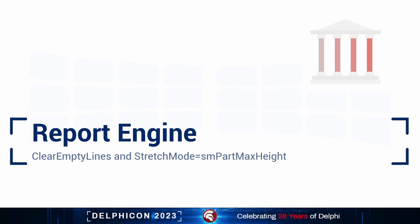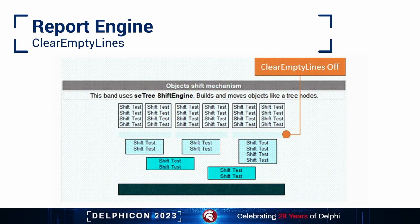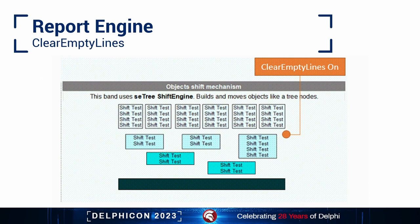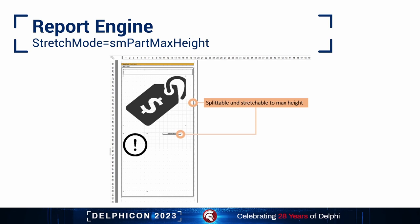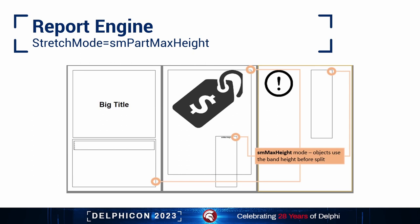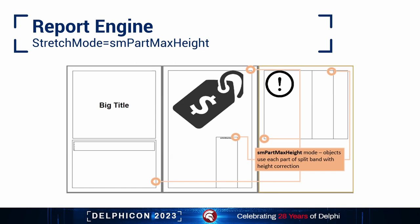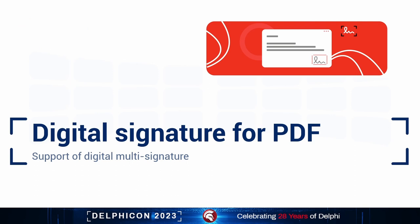There's a new optimization tool. The new ClearEmptyLines property allows removing empty instances of text objects. Combined with the CanShrink and ShiftAlways properties, this makes it possible to collapse objects with empty values, so the entire tree of objects at the bottom will move up. There's also a new stretch mode for text objects called SMPartMaxHeight. Breaking objects in this mode uses the height of each part after breaking with correction applied, unlike the SMMaxHeight mode which uses the band's height before breaking occurs.